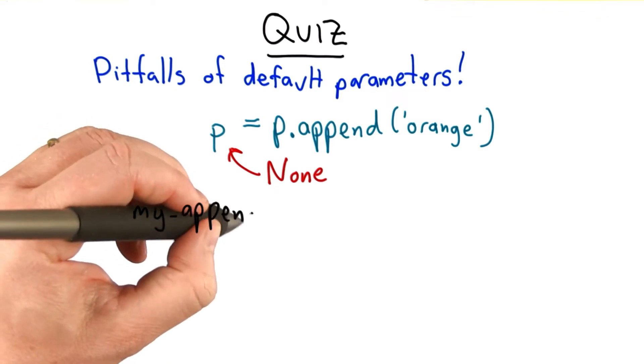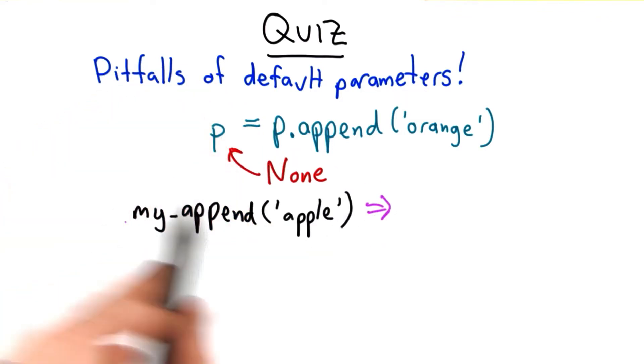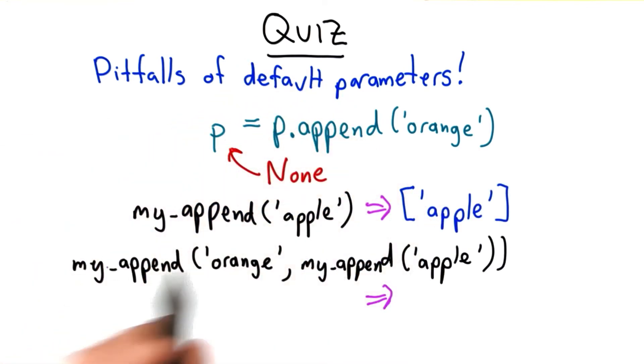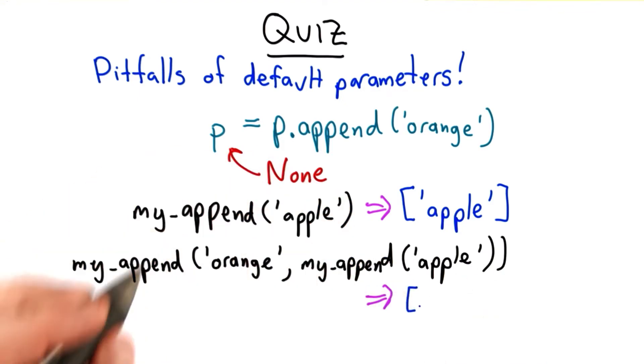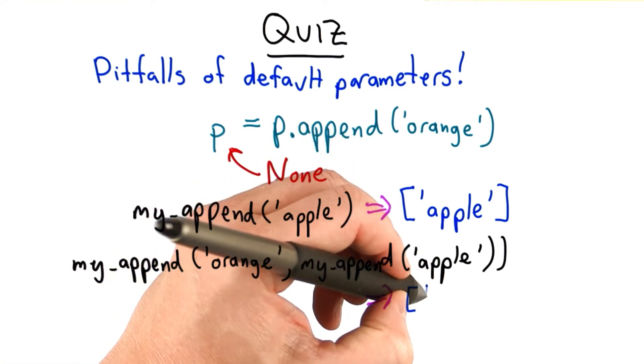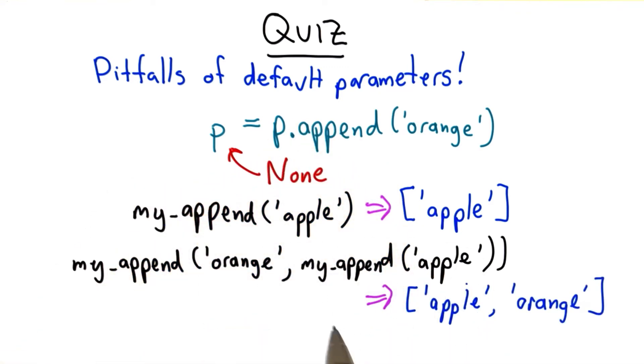I want a function my_append that behaves like this. If we call it with just one parameter, it'll create a new list containing that as the only element. If we call it like this, passing in two parameters, the first one being orange, the second one the result of my_append apple, well then what we would like to get is a list containing the elements apple and orange. This will allow us to write code in a fairly compact way.